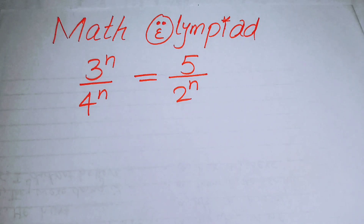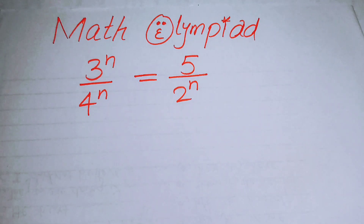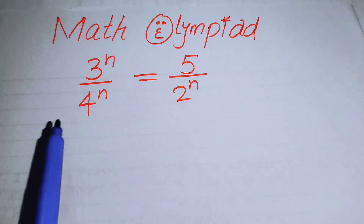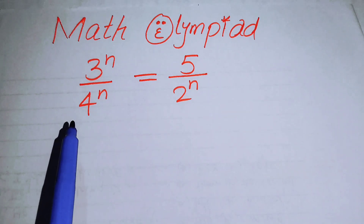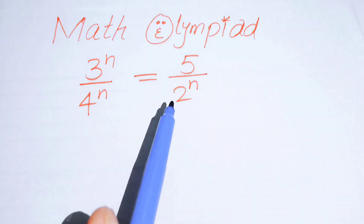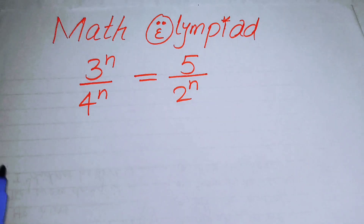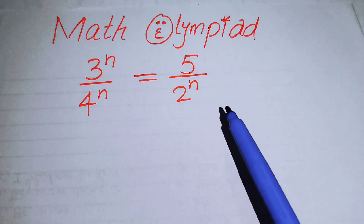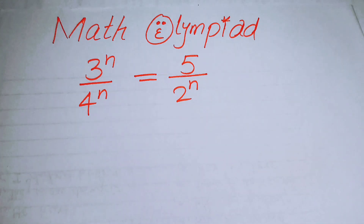Hello everyone, welcome back to the Map of Mathematics. In this video we are going to solve this nice exponential problem: 3 to the power of n over 4 to the power of n is equal to 5 to the power of n over 2 to the power of n. We will solve this problem for the values of n.